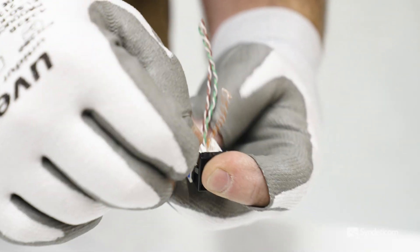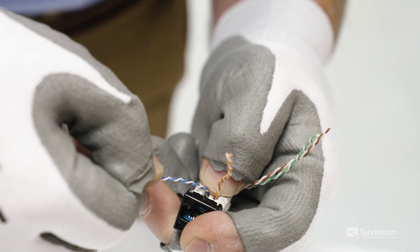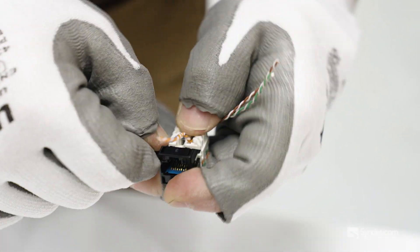You want to keep that cable jacket up nice and close at the back of the jack. Keep your thumbnail just behind it so you're not untwisting any more than what you have to to slot them on.